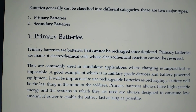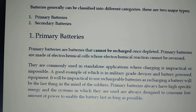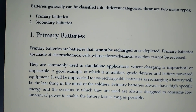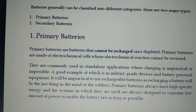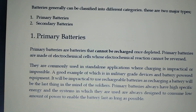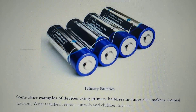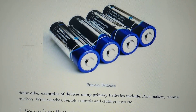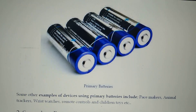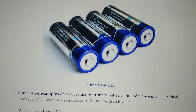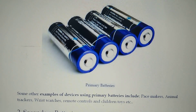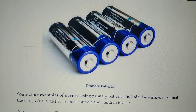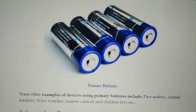Primary batteries always have high specific energy, and the systems in which they are used are always designed to consume a low amount of power to enable the battery to last as long as possible. Some primary batteries can be seen in our homes — in watches, remotes, children's toys, pacemakers, animal trackers, and wristwatches.